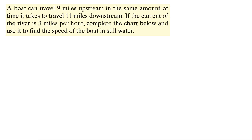This problem says that a boat can travel 9 miles upstream in the same amount of time it takes to travel 11 miles downstream. If the current of the river is 3 miles per hour, complete the chart below and use it to find the speed of the boat in still water.